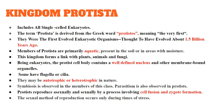Some have saprophytic mode of nutrition, some depend on other organisms, and some are parasites. Their mode of nutrition depends on the species. In some members, symbiosis is also observed — they live in mutual association with other organisms. Parasitism is also observed in members of Protista. They show both sexual and asexual methods of reproduction, but asexual is most common. Sexual reproduction occurs only during times of stress, and the different methods include cell fusion and zygote formation.